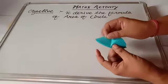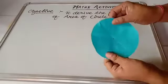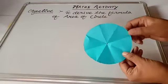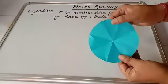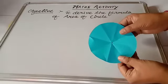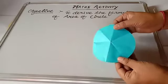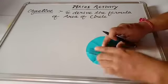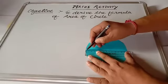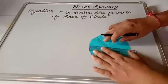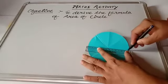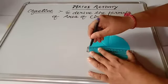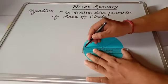Now I will unfold it. You can see the fold lines in this circle — these give us triangular portions of the circle. Take a ruler and draw lines along these fold marks. I am drawing the lines one by one: first line, second line, third line, and the fourth line.